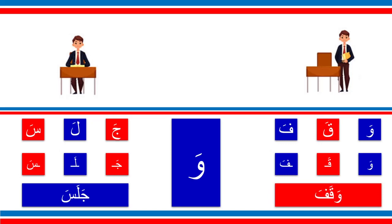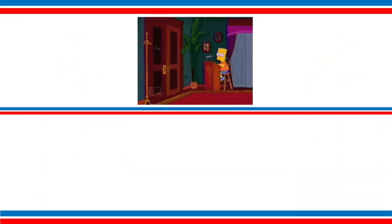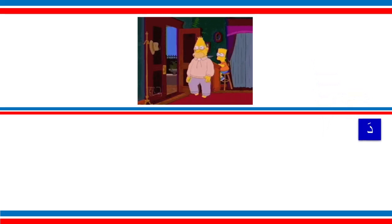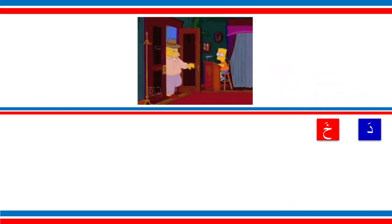So what does jalasa mean? Here we have this simple sentence: waqafa wa jalasa. Waqafa — the first man is doing waqafa, he is waqafa. Then we have 'wa' meaning 'and,' then another man is jalasa — he is jalasa. So the first one waqafa, he is standing. The second one is jalasa, he is sitting. He is waqafa wa jalasa.